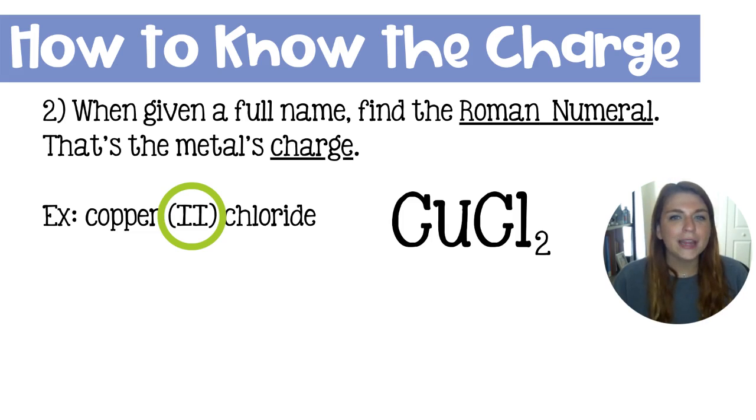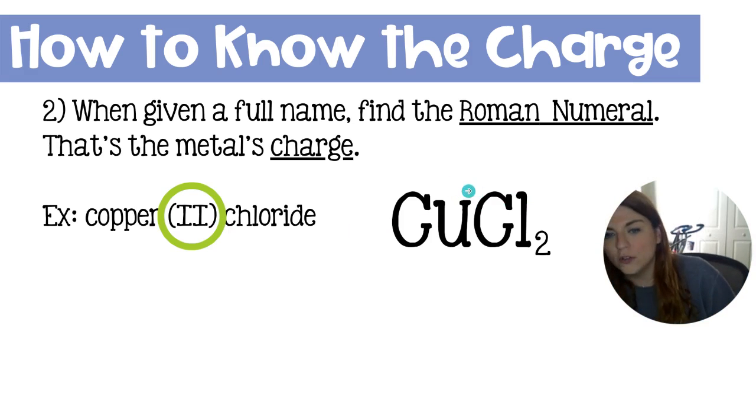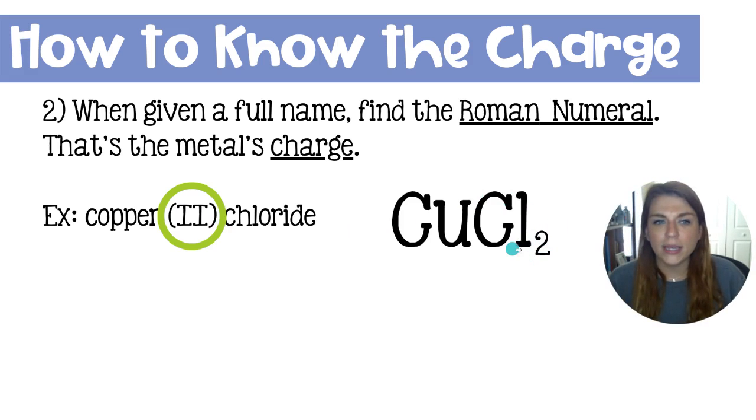Secondly, we can look at the full name of the chemical and the Roman numeral is going to indicate the metal's charge. So in this case, we have copper (II) chloride saying that copper started with a plus two over here and it crisscrossed down to the chlorine. And the chlorine has a minus one, which crisscrosses over here to the copper. And in this case, you would wind up with CuCl2.